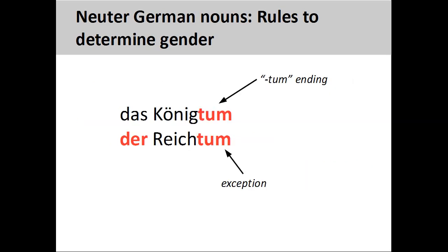Nouns ending in '-tum' will generally be neuter, such as 'Königtum' (kingship), although there are some exceptions to this rule, such as 'Reichtum' (riches).